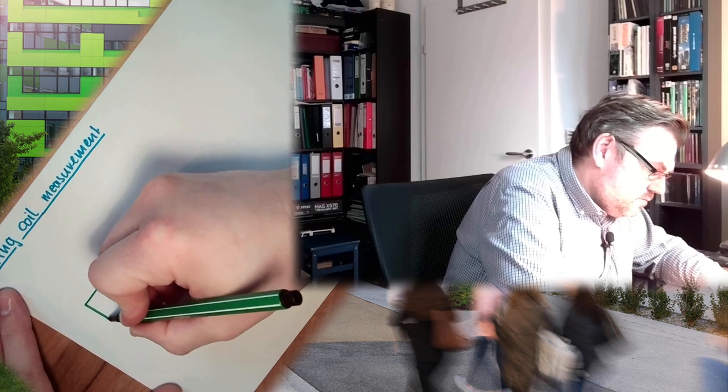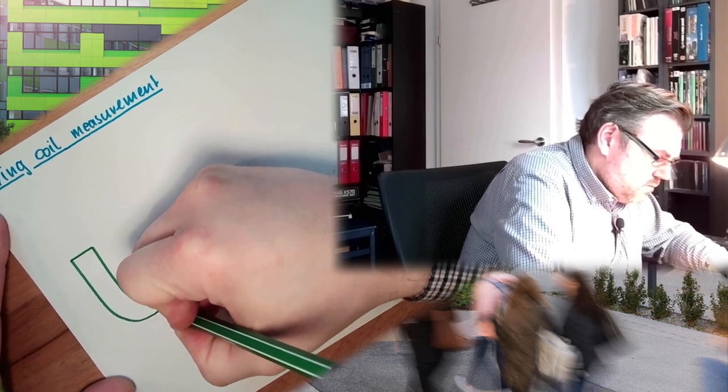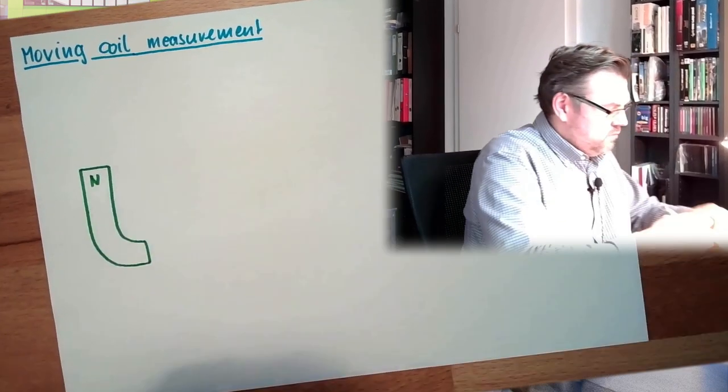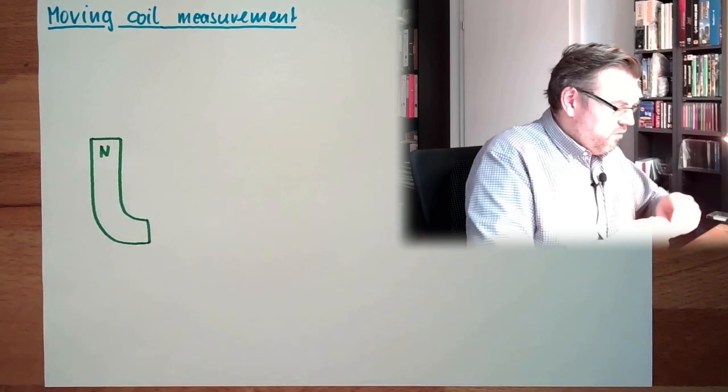The core of a moving coil measurement system is the magnetic force. We have one permanent magnet in there. I will draw some sort of U-shaped, horseshoe-shaped magnet. We have somewhere a north pole, and somewhere a south pole.